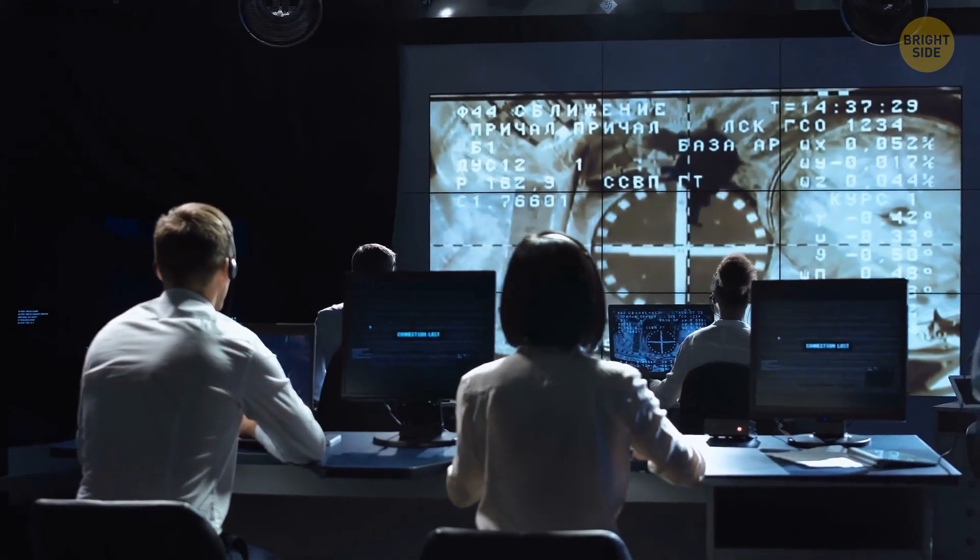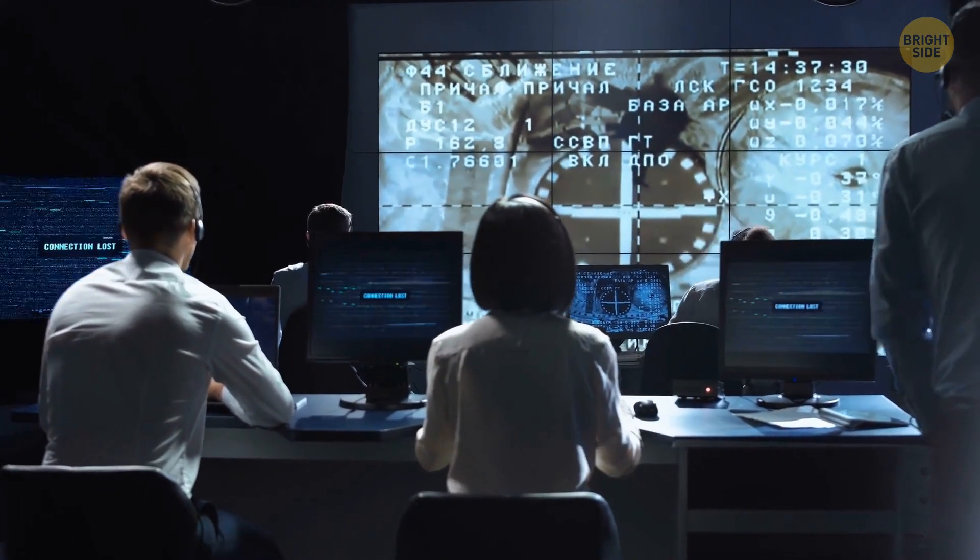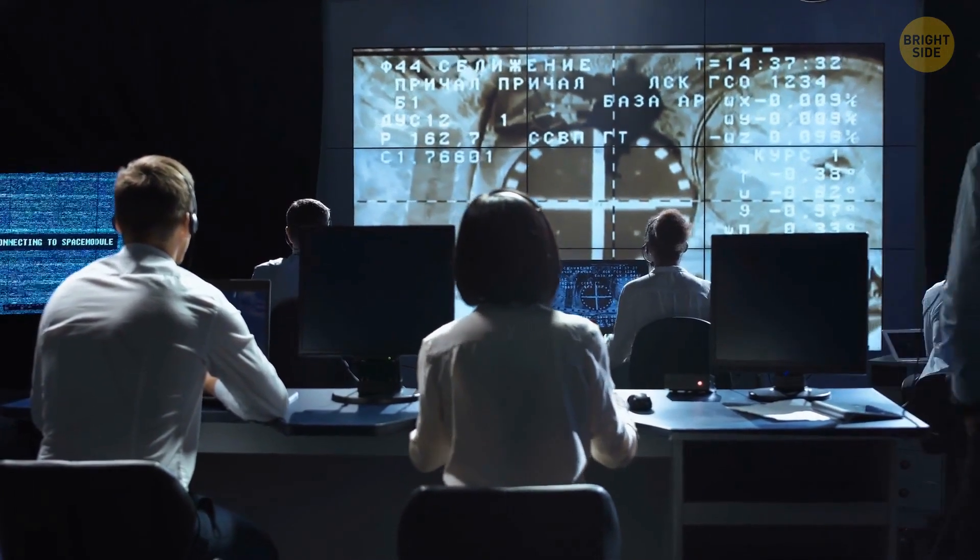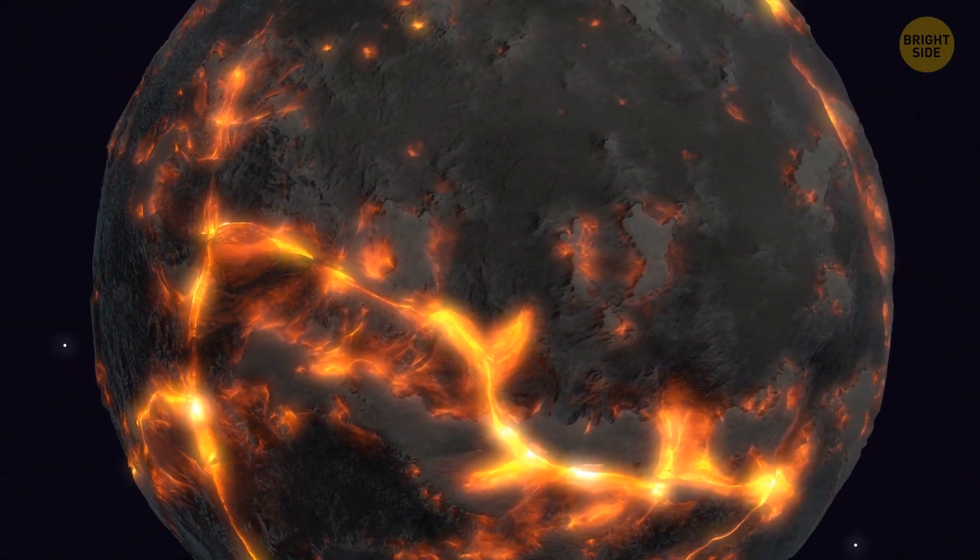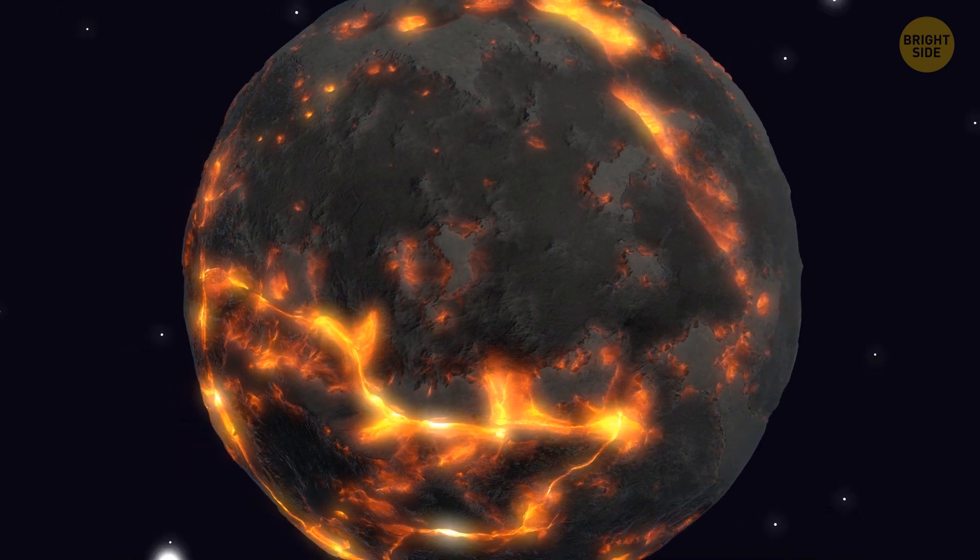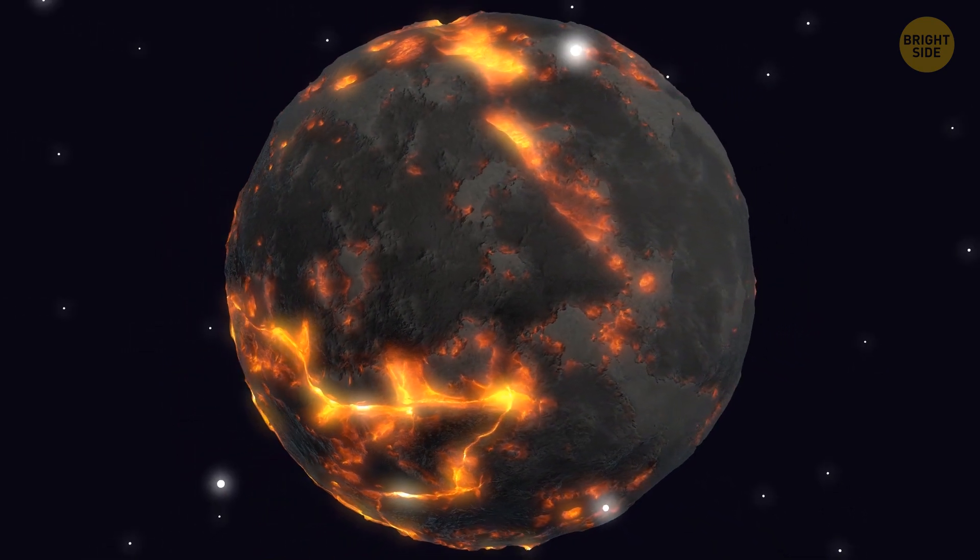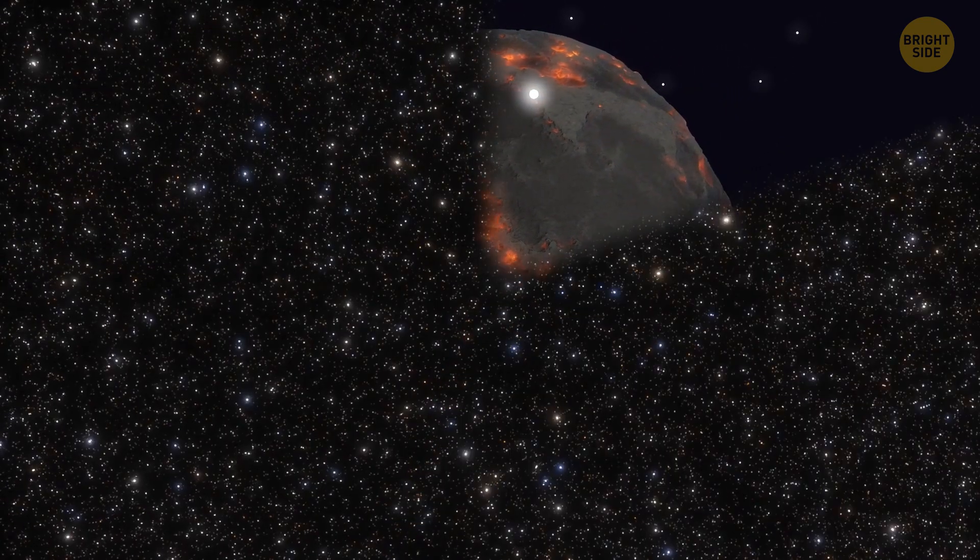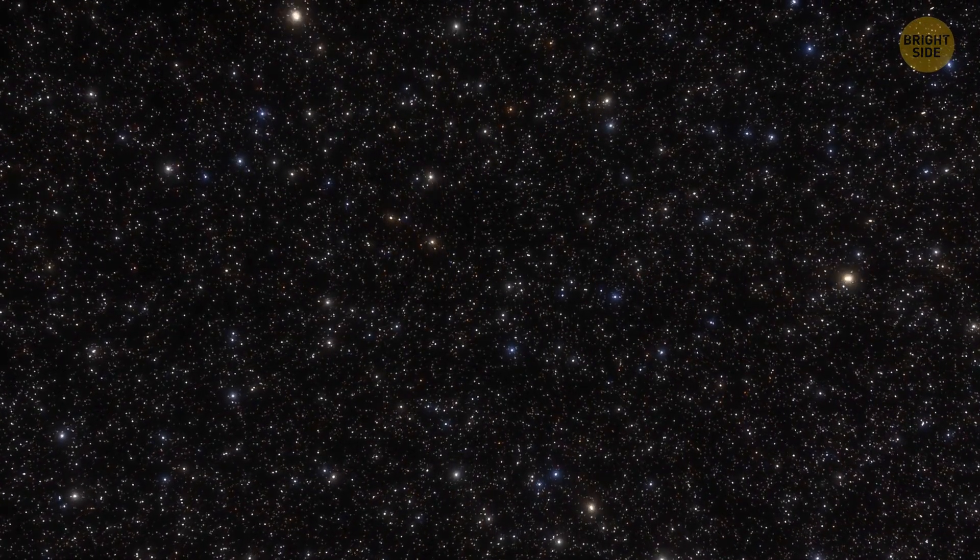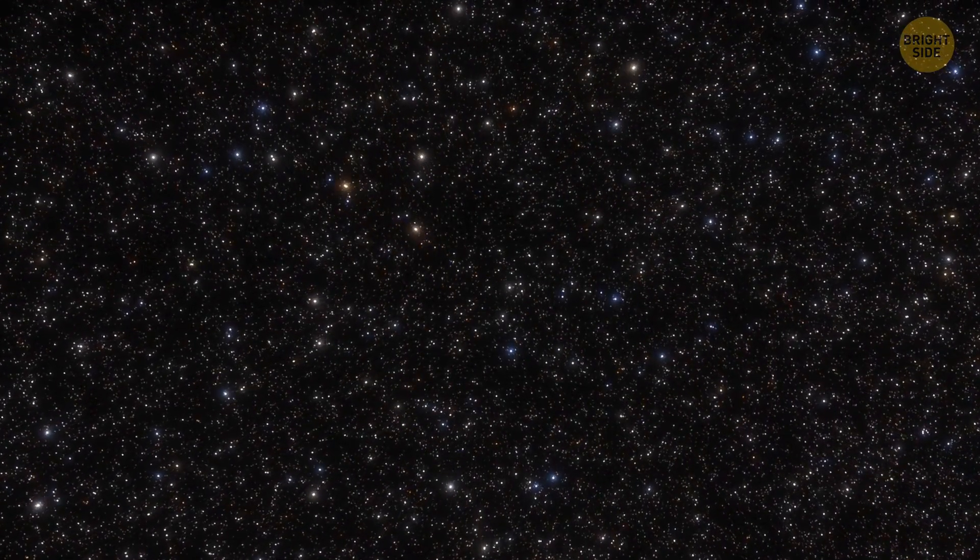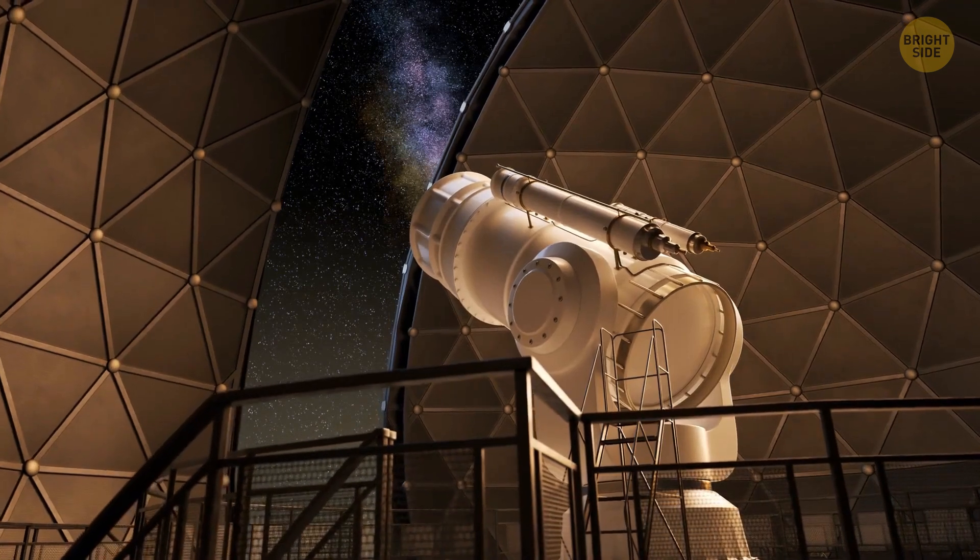There are new theories coming around. For example, a theory called gravitational instability. It says that, instead of the pieces coming together bit by bit, the material in the disk collapses all at once, directly creating a planet. But even with this theory, it's hard to explain how such a heavy planet could form without a really massive disk. It'll take us some time to figure out the truth.